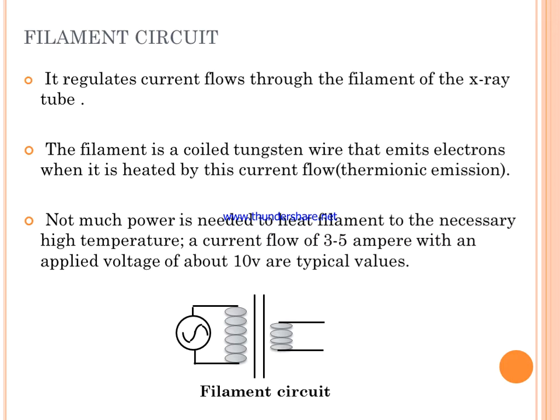The filament circuit regulates current flow through the filament of the X-ray tube. The filament is a fine wire that emits electrons when heated via thermionic emission. Not much power is needed — a current of 3 to 5 amperes with an applied voltage of about 10 volts at typical values. Here is an image showing the filament circuit.